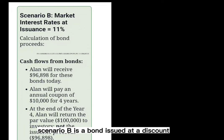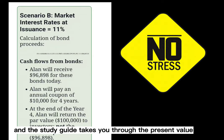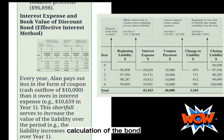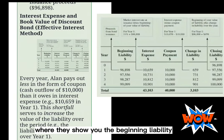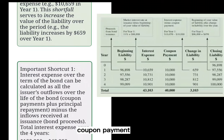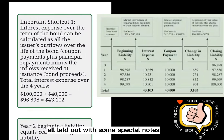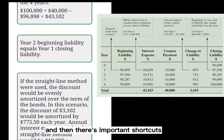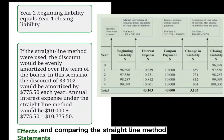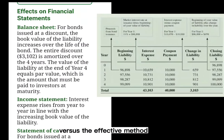Scenario B is a bond issued at a discount, and the study guide takes you through the present value calculation of the bond. Then there's a nice table showing the beginning liability, interest expense, coupon payment, change in liability, and closing liability, all laid out with special notes and important shortcuts comparing the straight line method versus the effective method.